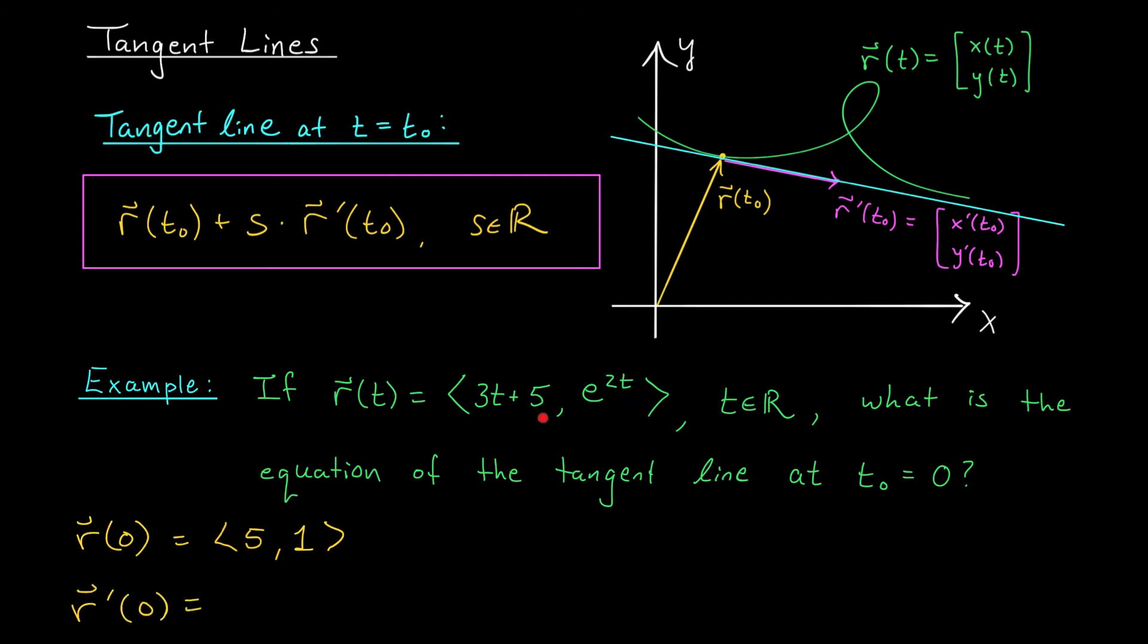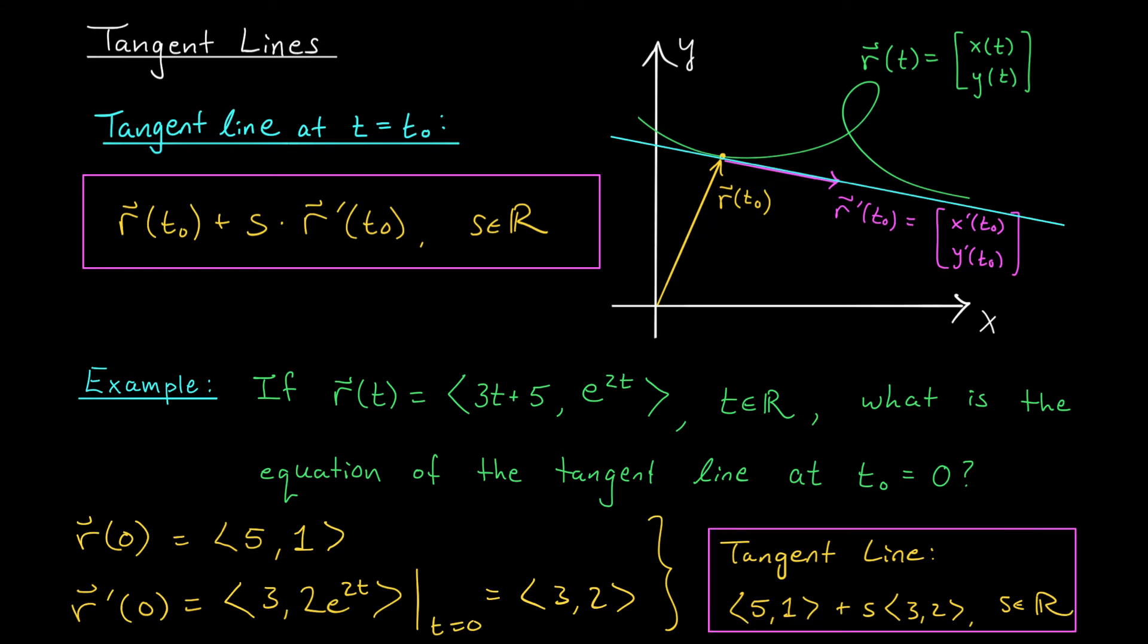The direction vector is given by the derivative of r at t₀. So r'(t₀) is given by, well, I take the derivative of each component separately. That's going to give me ⟨3, 2e^(2t)⟩, and I have to plug in t₀ equals 0. When we plug this in, we're going to get the vector ⟨3, 2⟩. Okay, we're ready to write down the equation of our line. According to our formula, the tangent line can be described by this expression here. Using our vectors ⟨5, 1⟩ and ⟨3, 2⟩, the equation of our line is ⟨5, 1⟩ plus s times ⟨3, 2⟩, where s can be any real number. We want to describe this entire line. And there you have it, folks, the vector equation of the tangent line.